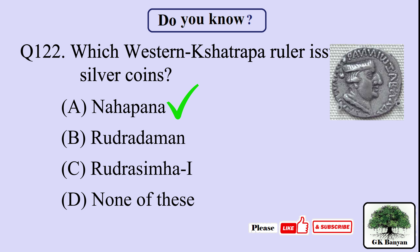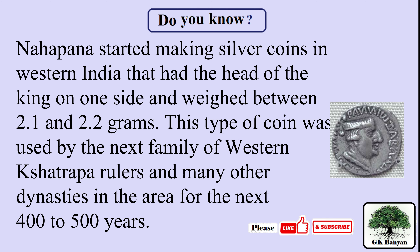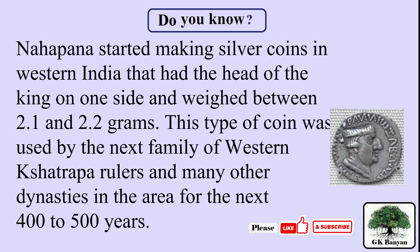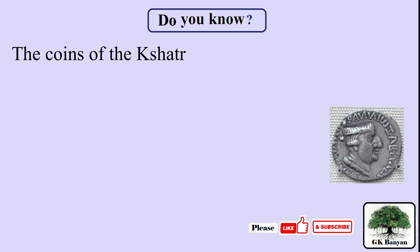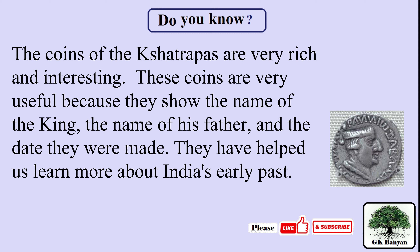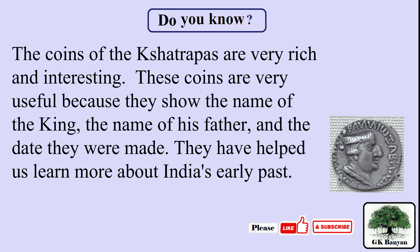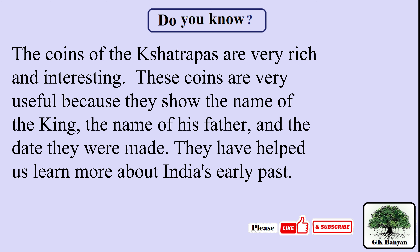The right answer is A. Nahapana. Nahapana started making silver coins in Western India that had the head of the king on one side and weighed between 2.1 and 2.2 grams. This type of coin was used by the next family of Western Kshetrapa rulers and many other dynasties in the area for the next 400 to 500 years. The coins of the Kshetrapas are very rich and interesting, showing the name of the king, his father, and the date they were made, helping us learn more about India's early past.